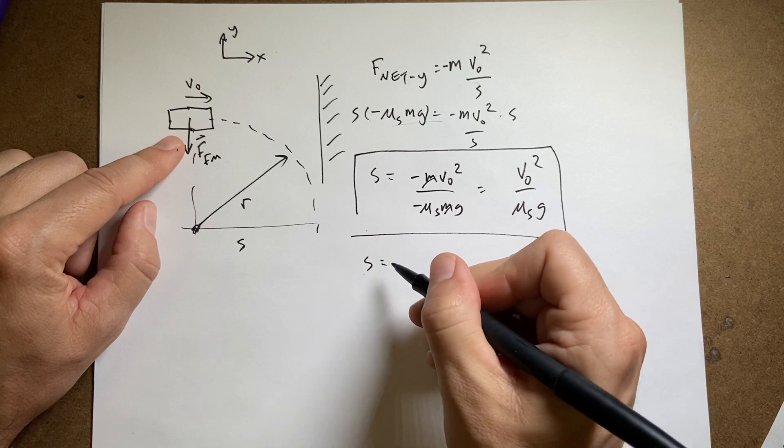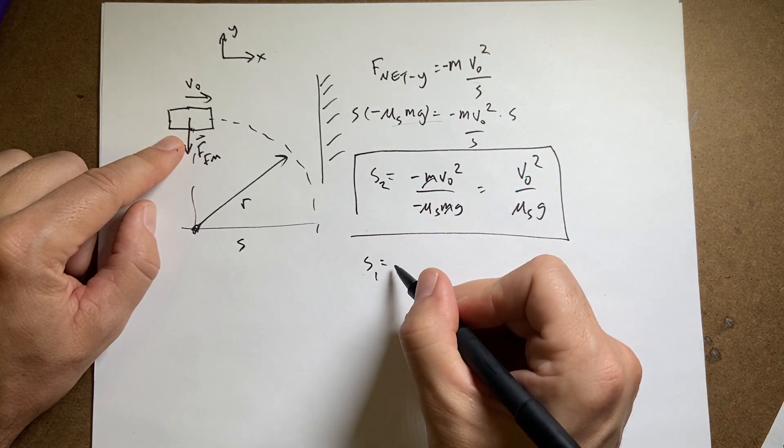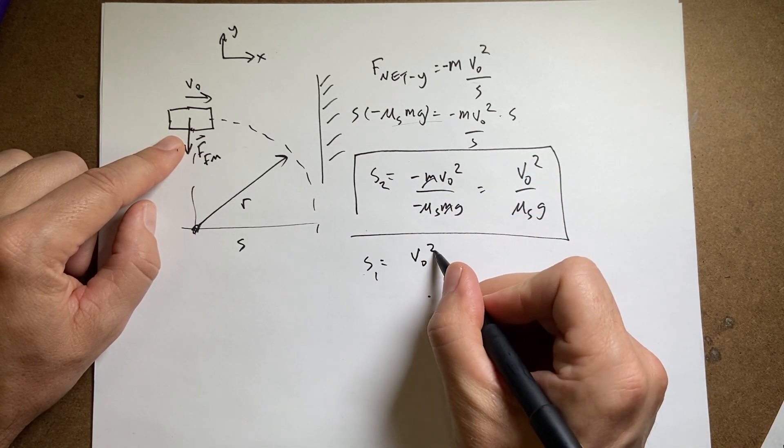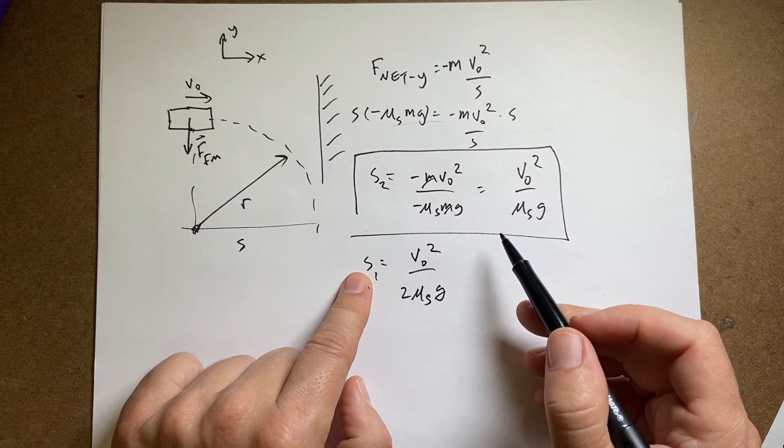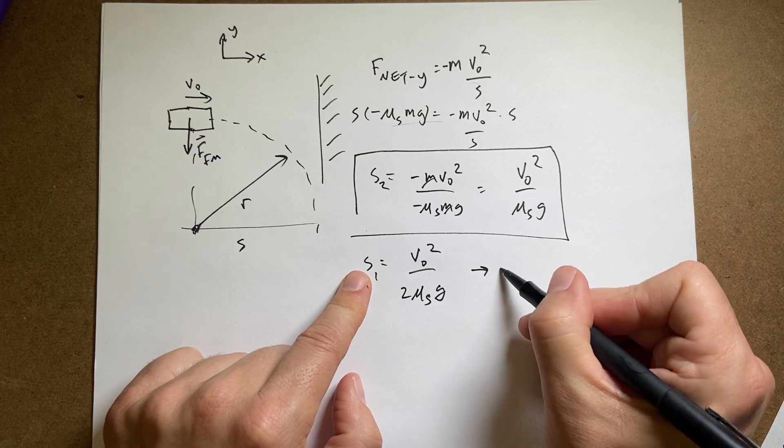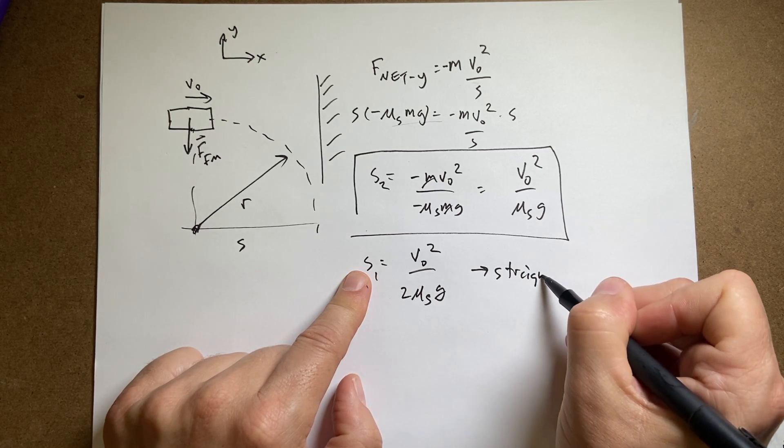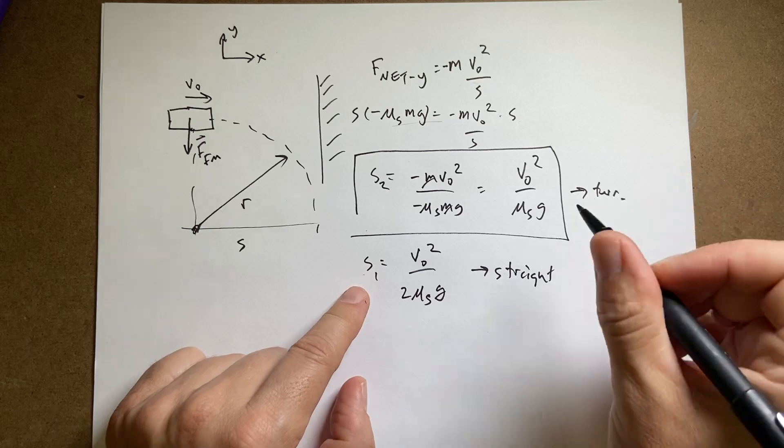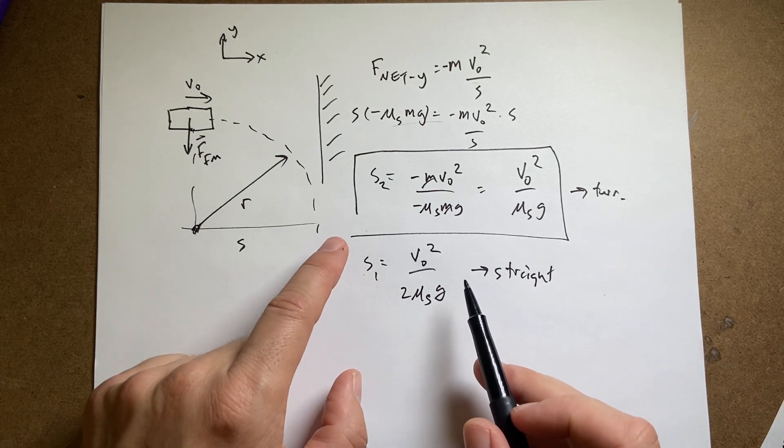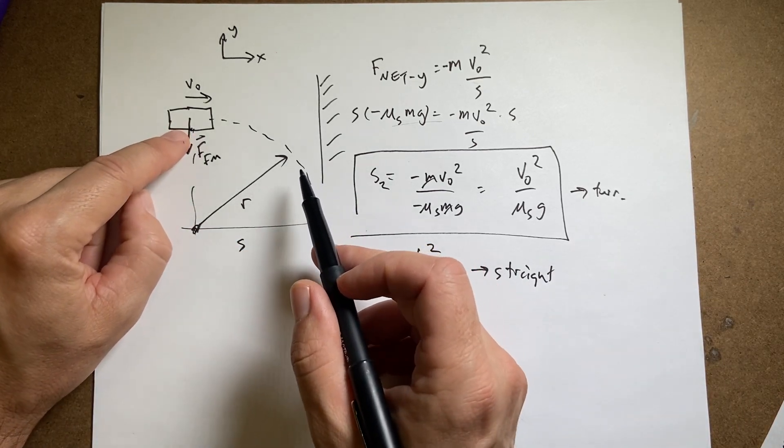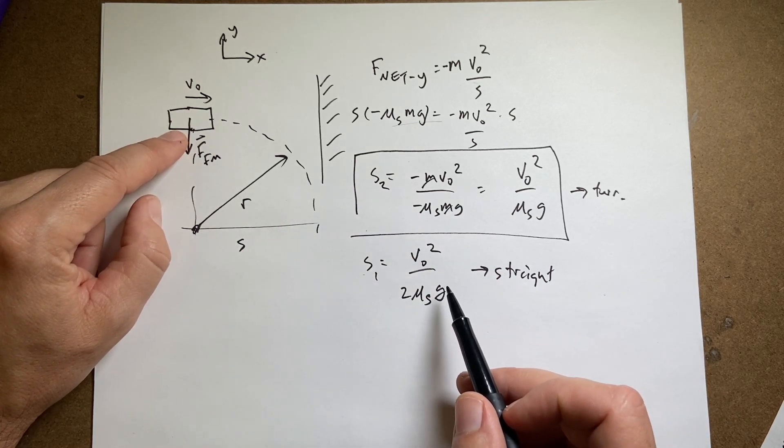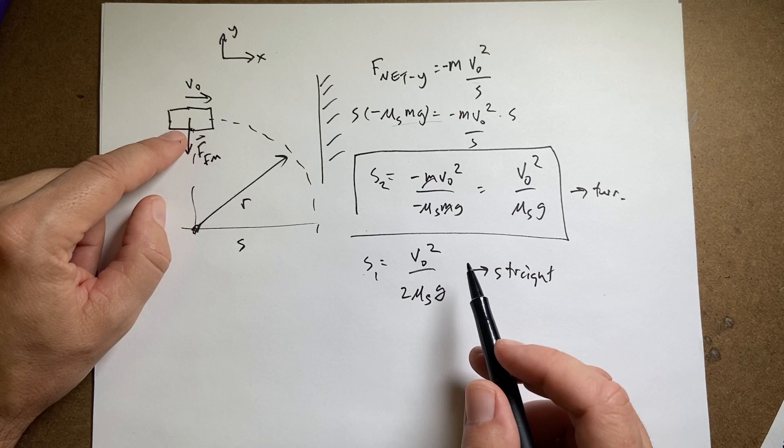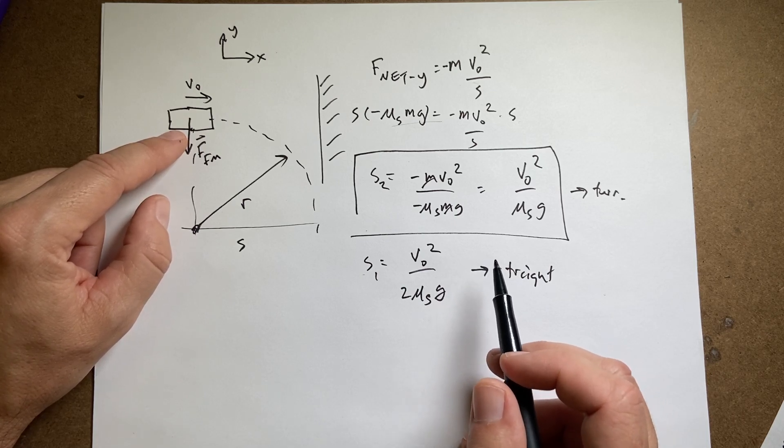Now remember, here's the other one. This is s2. S1 is v zero squared over 2 mu s g. So this one, by stopping in a straight line, this is straight, turn. So by stopping in a straight line, you would require half the distance as if you wanted to turn. So you should stop. Don't turn. And this is not actual driving advice. This is just a physics problem. Okay.